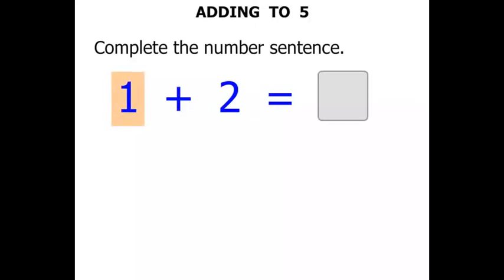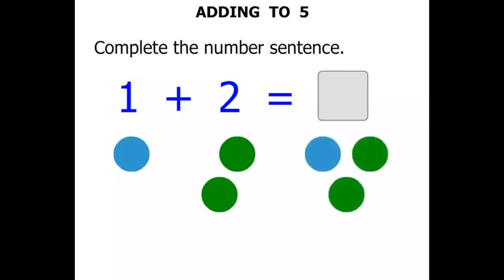For 1, we can have a blue circle. For 2, we've got to have 2 circles: 1, 2, 2 green circles this time. And we want to put them together, we want to add them. So let's have the blue circle and the 2 green circles. Let's see how many we have altogether.